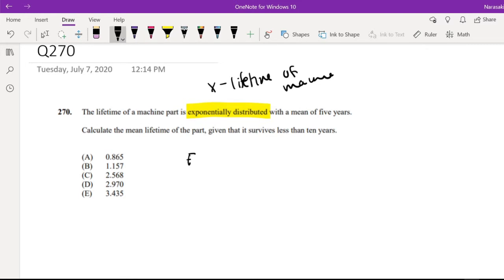We're looking for the expectation of X given that X is less than 10. We know the exponential distribution formula, where f(x) is defined to be 1/5 e to the negative t over 5.